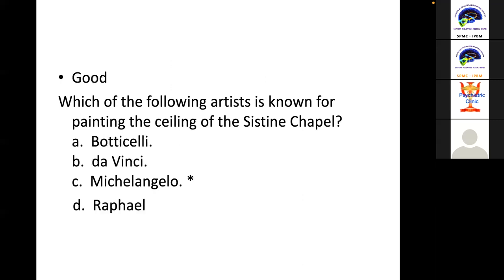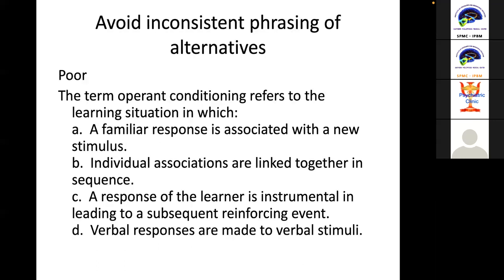A good version of this question would be: 'Which of the following artists is known for painting the ceiling of the Sistine Chapel? Botticelli, Da Vinci, Michelangelo, and Rafael.' The correct answer is Michelangelo. Notice that all alternatives are real artists — that is the homogeneity of alternatives.